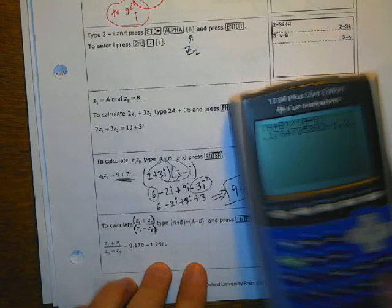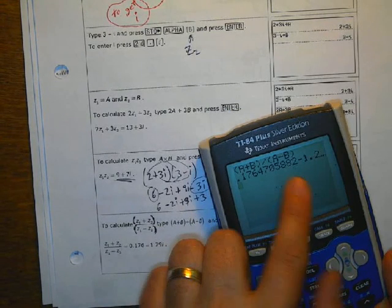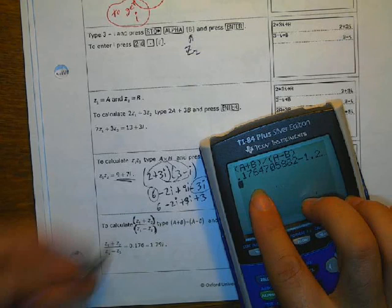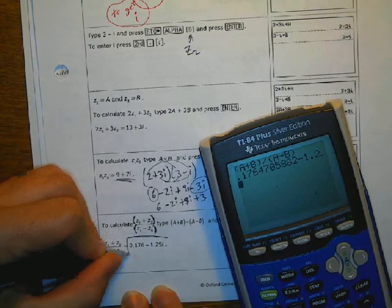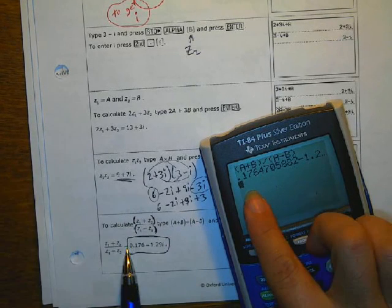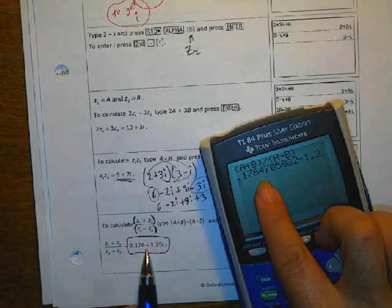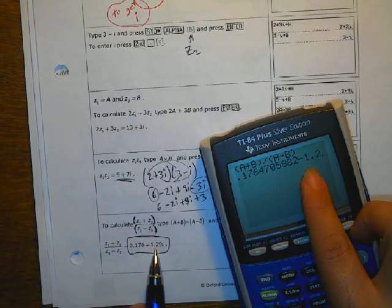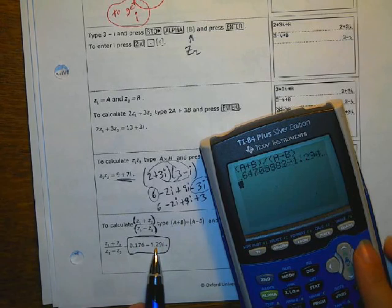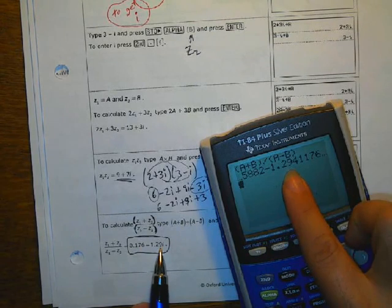And you end up, oh, my gosh. So if you're going to write this in three significant figures, you can write this as 0.76 minus 0.129i.